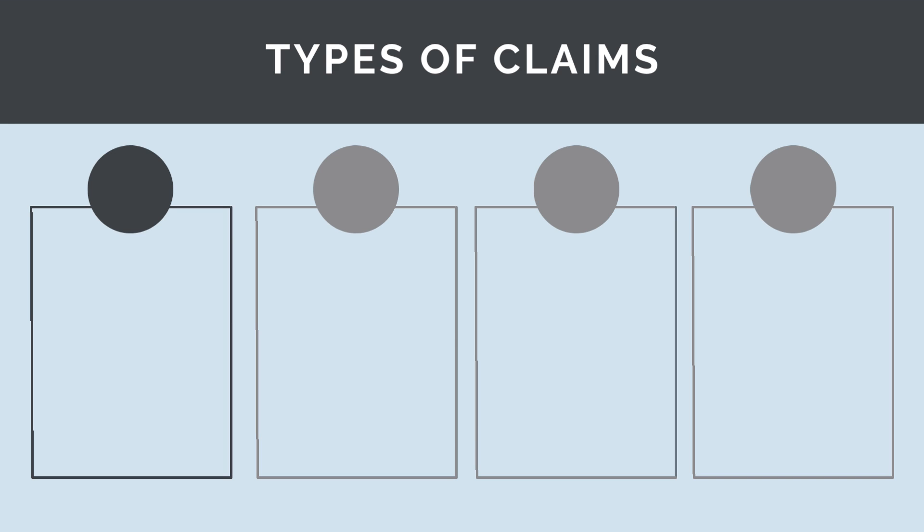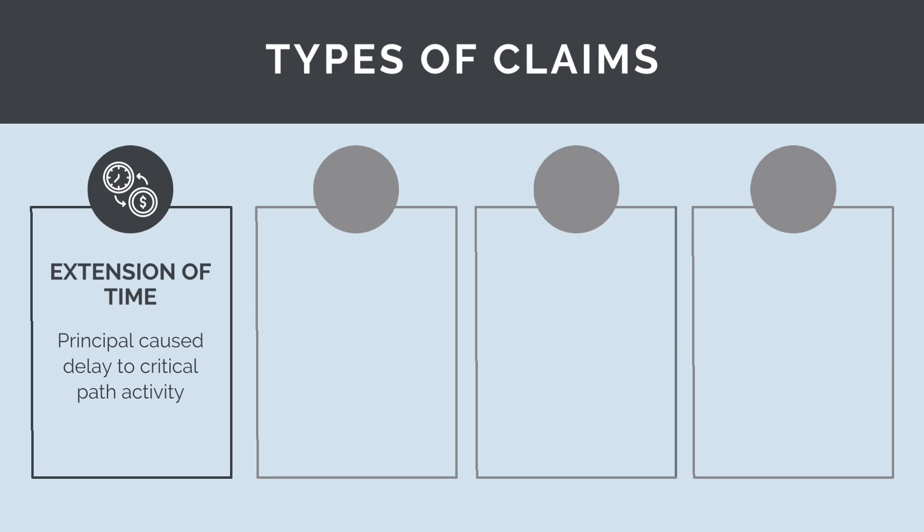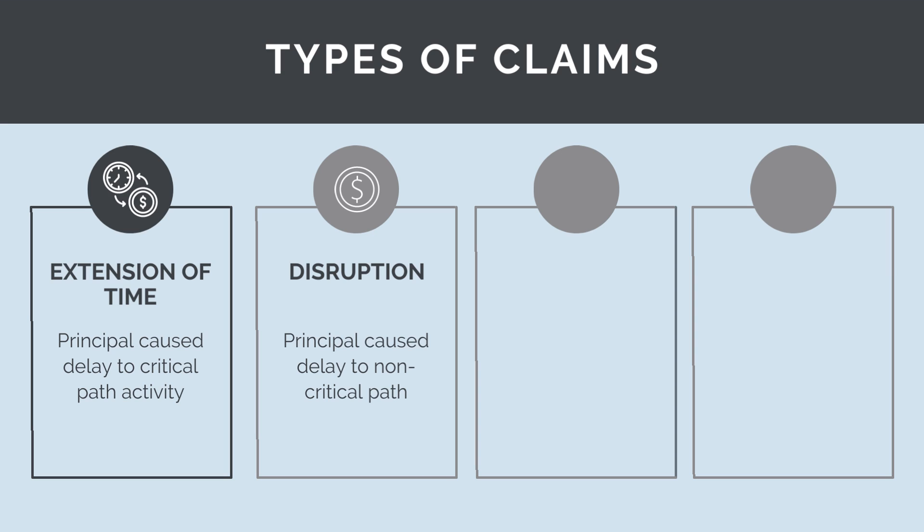Multiple different types of claims exist. The different claims vary based on the source and impact. An extension of time claim is where the principal causes a delay to a critical path activity. Remember the term critical path — it's an activity that if delayed, delays project completion. Under an extension of time claim, the contractor can claim time and money.